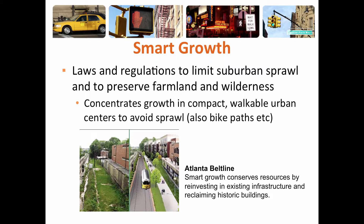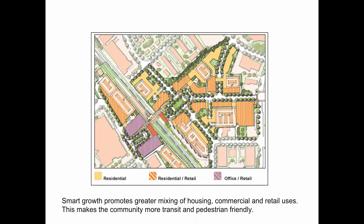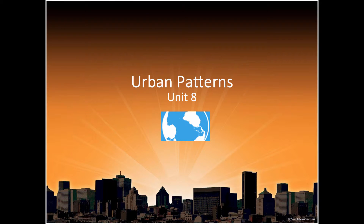Urban planning has been leaning towards a new concept called smart growth — laws and regulations to limit suburbs from spreading and to protect farmland and wilderness areas. Smart growth plans concentrate on compact, walkable areas with bike paths to avoid sprawl. They come up with new ways to use old spaces — for example, old railroad tracks and industrial areas are being converted into walking paths and park areas, and many cities are being designed so people can walk and ride bikes instead of drive. This is good for the environment and for people's health, resulting in a better mix of housing, commercial, and retail use. And that's it for urban land use.